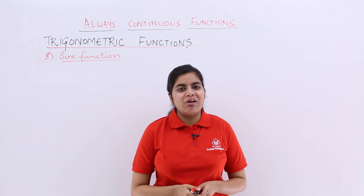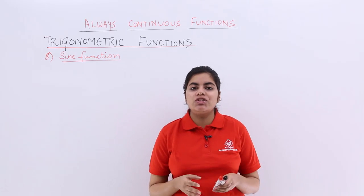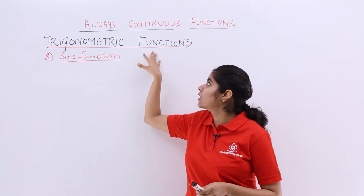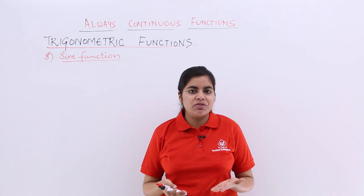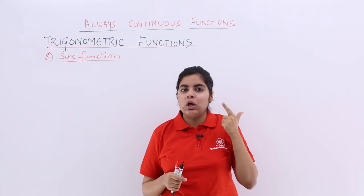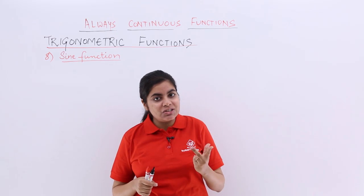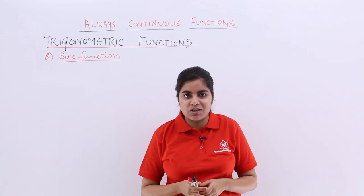In this video let's talk about another category of always continuous functions which is named as trigonometric functions. We already know the various trigonometric functions - they are of six types: sine, cosine, tangent, cosecant, cotangent, and secant, which is the inverse of cosine.